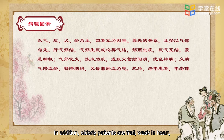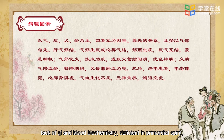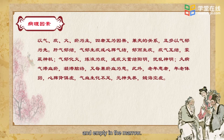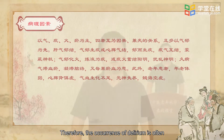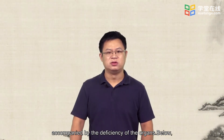In addition, elderly patients are frail, weak in heart, spleen and kidney, lack of qi and blood biochemistry, deficient in primordial spirit, and empty in the marrow. Therefore, the occurrence of delirium is often accompanied by the deficiency of the organs.